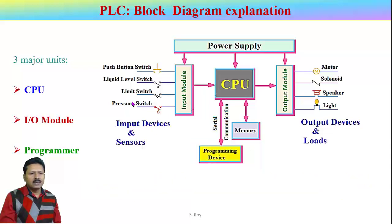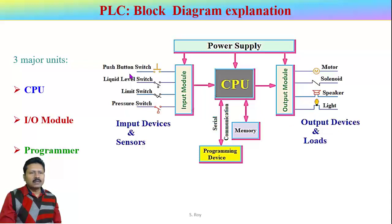Different field devices are connected with the input module. Signals come from these field devices, and the input module converts that field signal into a logic level signal and sends it to the processor. The processor processes those signals, executes the program, and produces a particular output signal that actuates different actuators through the output module. Different input sensors include push buttons, liquid level sensors, limit switches, and pressure sensors. Different output actuators include motors, solenoids, speakers, and lights.